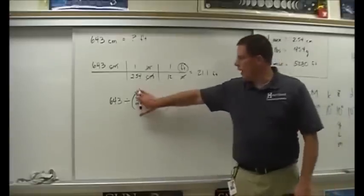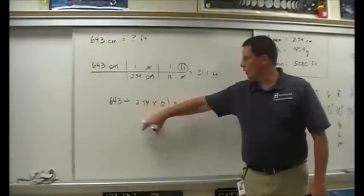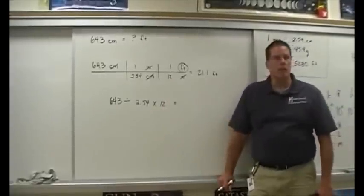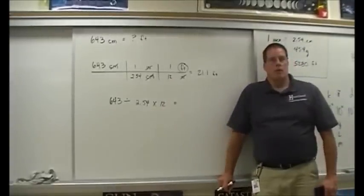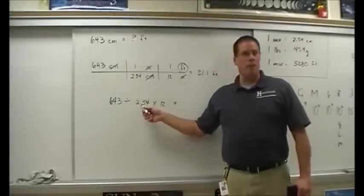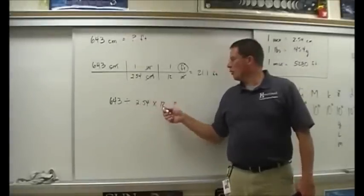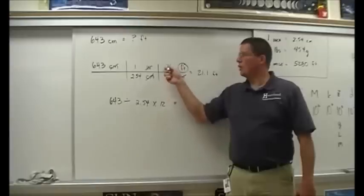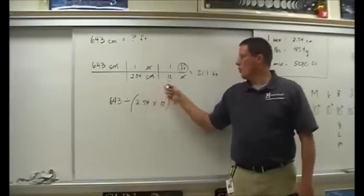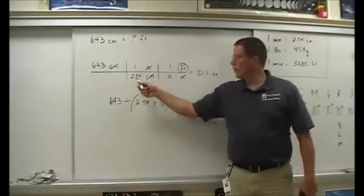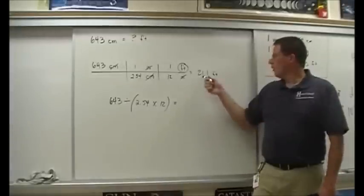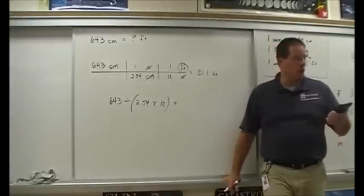What if I didn't use parentheses? Is it illegal math? It would divide 643 by 2.54, give an answer, and then that 12 would actually act like it were on top. So order of operations helps us multiply these guys first, so that when we have our number on top and we divide it, we're golden.